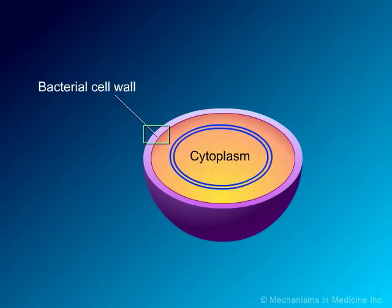Depending on the bacterial species, a number of different external structures may be found, such as a capsule, flagella, and pili.